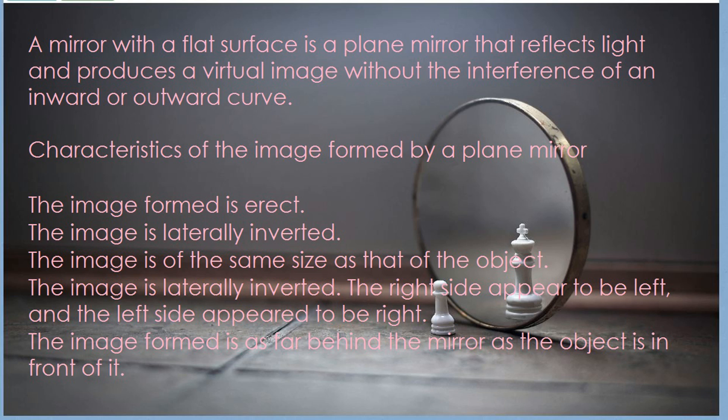A mirror with a flat surface is a plain mirror that reflects light and produces a virtual image without the interference of an inward or outward curve. That means a plain mirror is neither concave nor convex — it's just a flat surface.